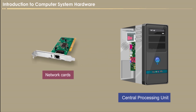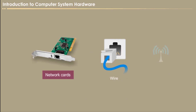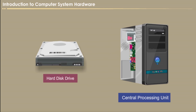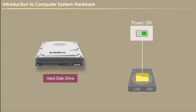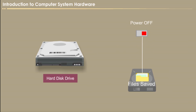Network cards. This allows the computers to connect together in order to communicate with each other. Network cards are connected via wire or wireless. Hard disk drive. It stores and provides large amounts of data on an electromagnetic surface. Even if power interruption prevails, it can remember what is stored in them. So, it is called a non-volatile device.